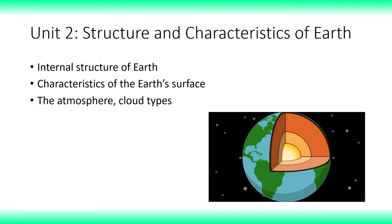We'll end Unit 2 by looking at the atmosphere — the composition of the atmosphere, different types of clouds, how those clouds form, and what they can mean. There are ways you can look at a cloud in the sky and be fairly confident about the type of weather coming your way — whether it'll be good weather, bad weather, cold, warm, or storms. There's some information you can gather just by looking at the clouds on the horizon.